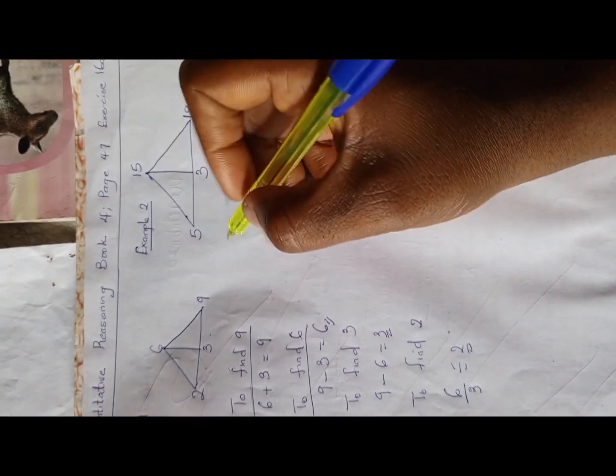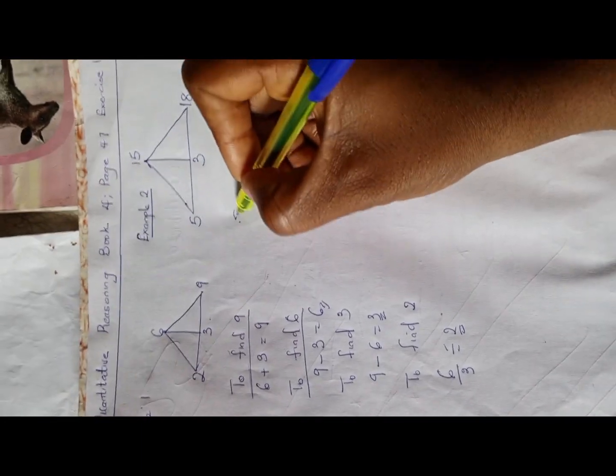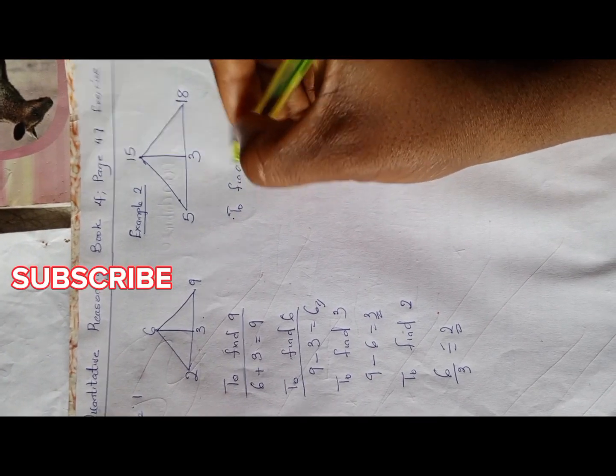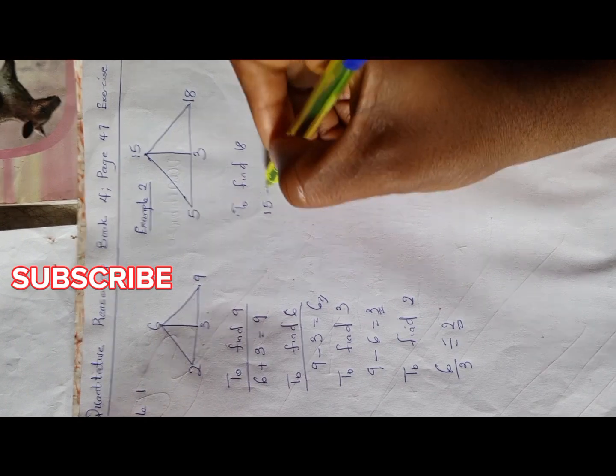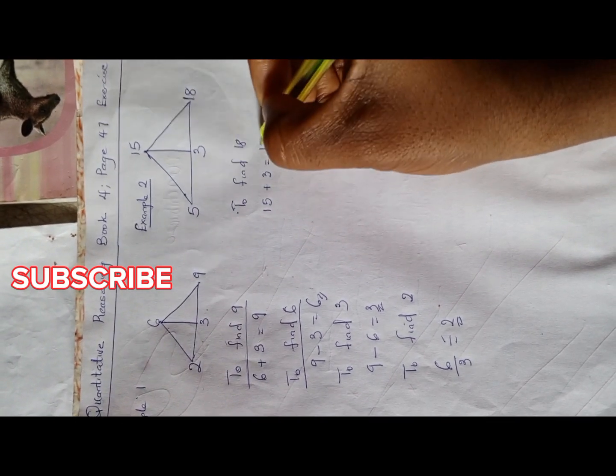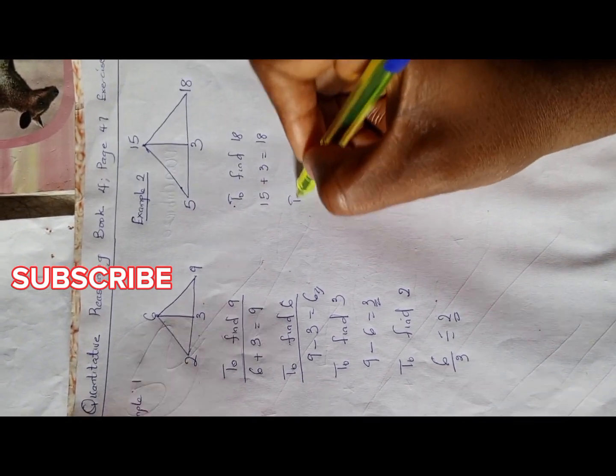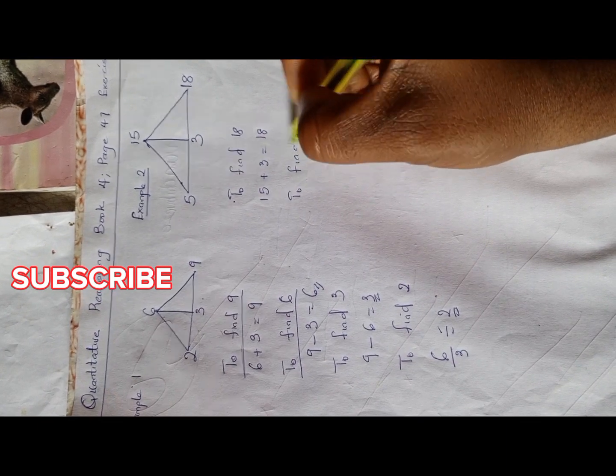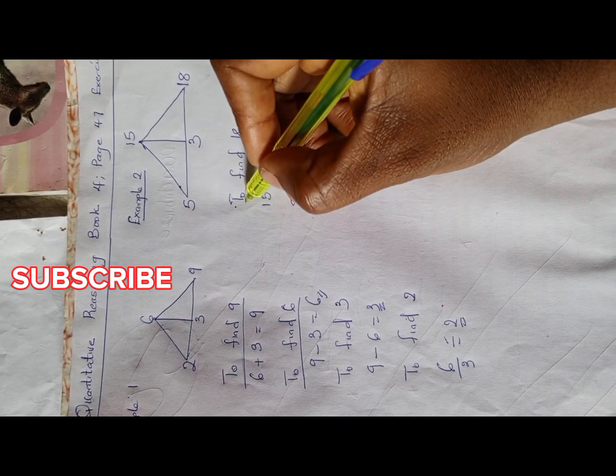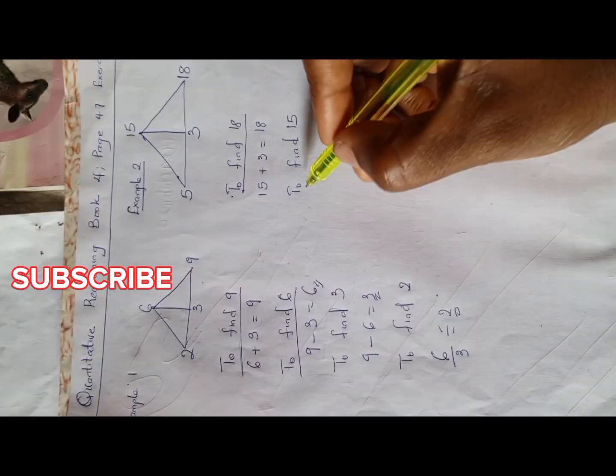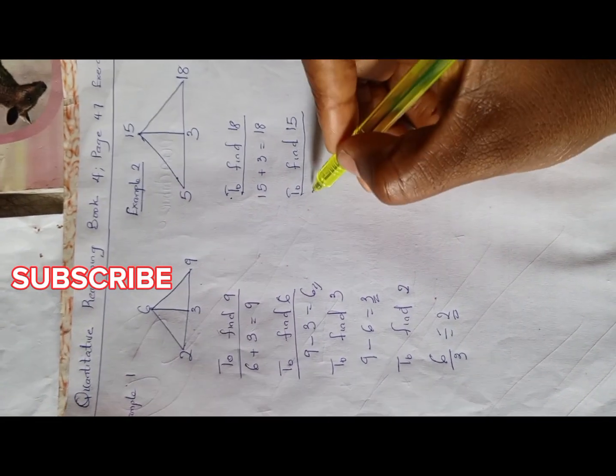To find 18, you have 15 plus 3, which equals 18. To find 15, you have 18 minus 3 is 15.